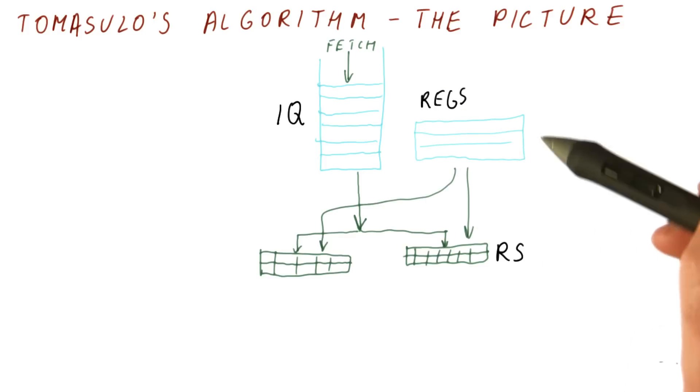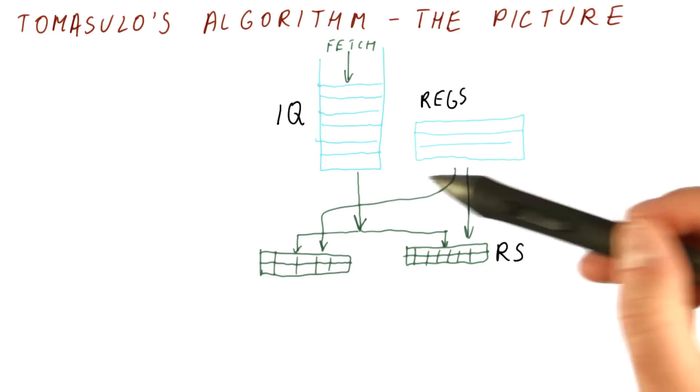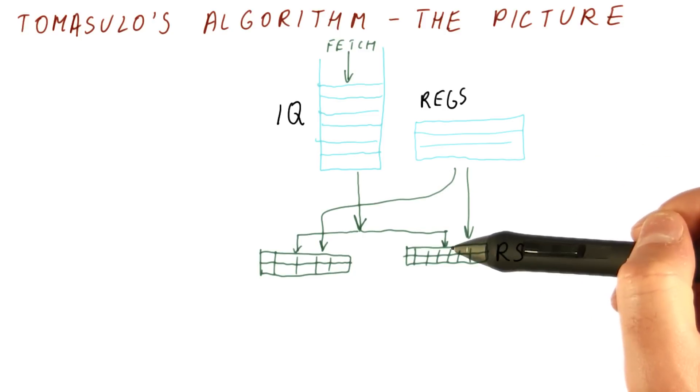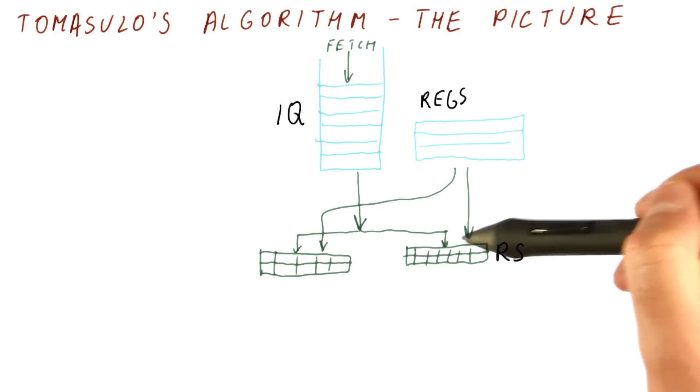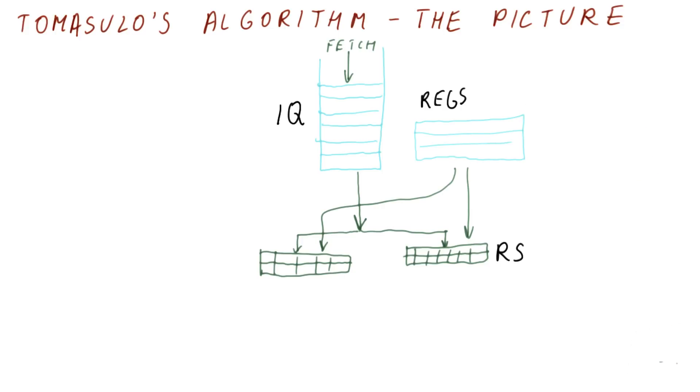There is a floating point register file. This is where your floating point registers are. When an instruction is inserted into a reservation station, the values that are already in registers, meaning the values that are actually already present and ready for execution, are simply entered into the reservation station from the register file.